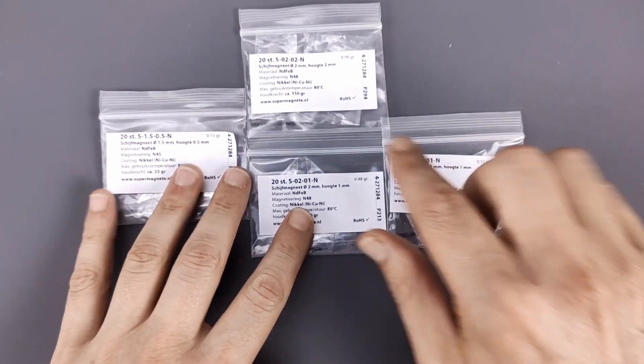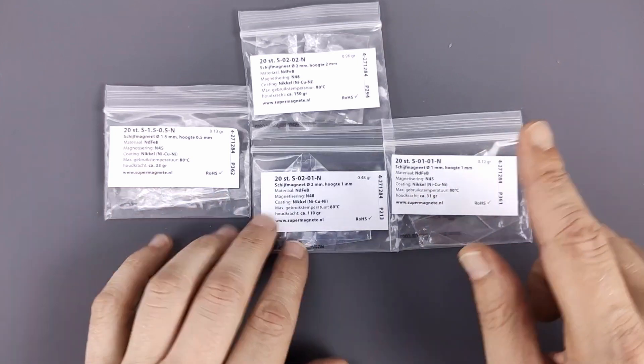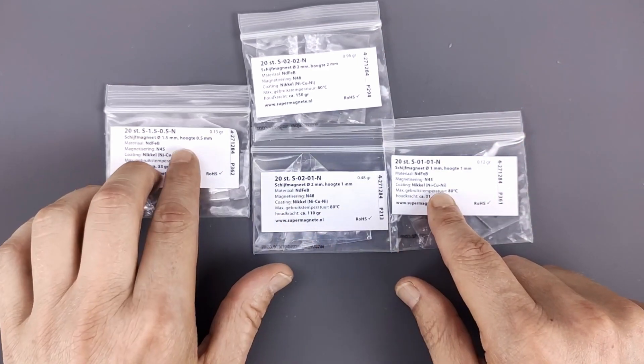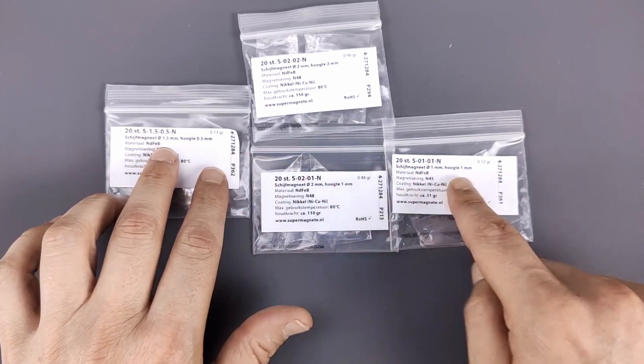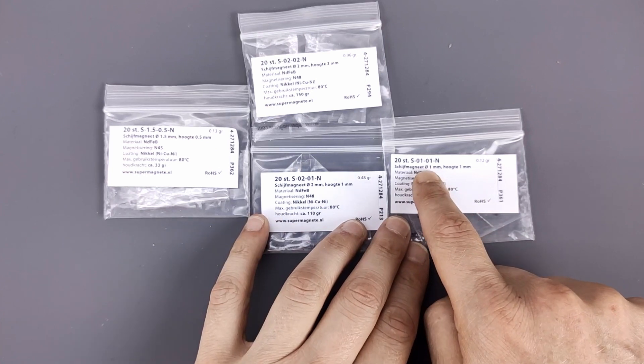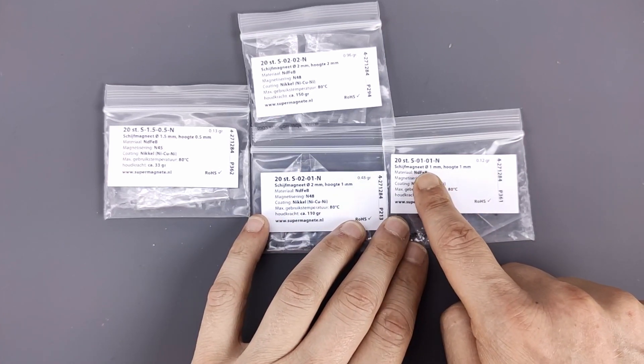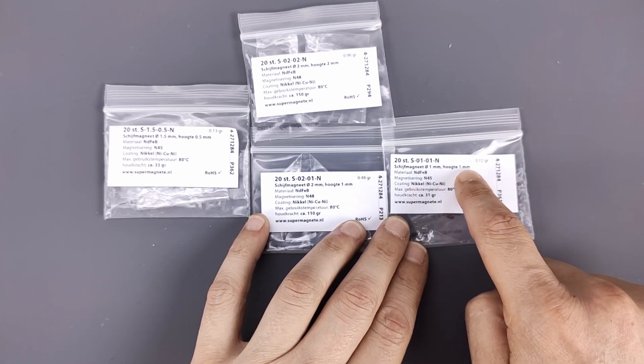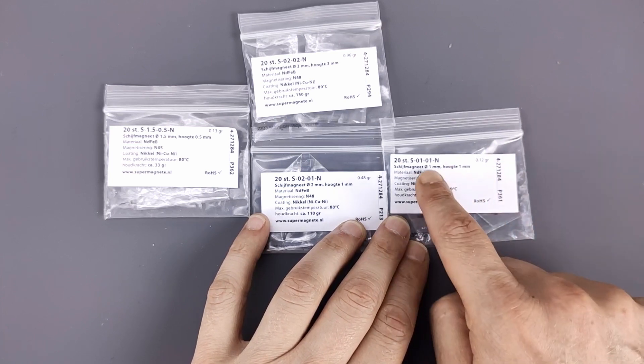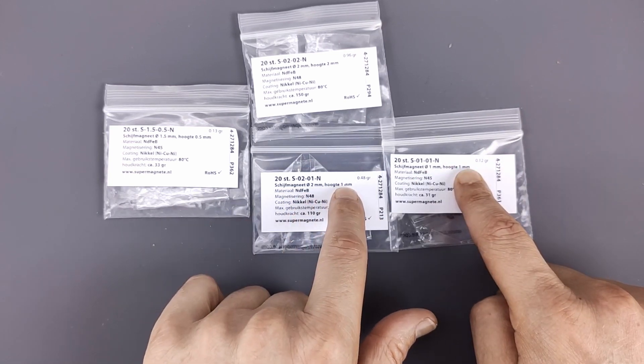So they sent me four different sizes. They're all disc magnets. And the smallest one, well it's kind of between those two, but this one looks...